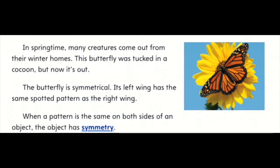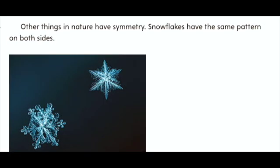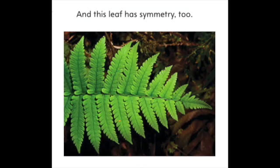In springtime, many creatures come out from their winter homes. This butterfly was tucked in a cocoon, but now it's out. The butterfly is symmetrical. Its left wing has the same spotted pattern as the right wing. When a pattern is the same on both sides of an object, the object has symmetry. Other things in nature have symmetry. Snowflakes have the same pattern on both sides, and this leaf has symmetry too.